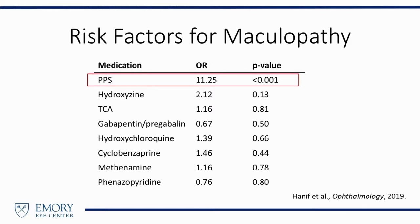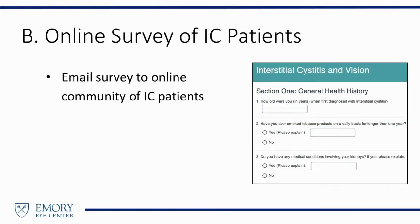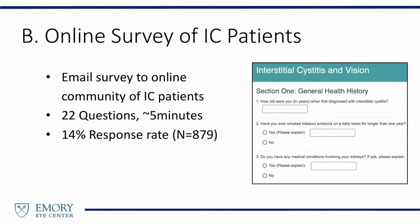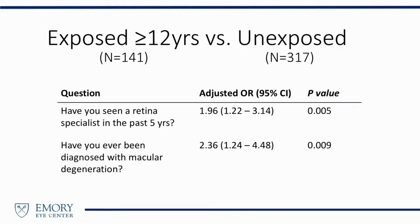But this was just 219 patients seen at an eye center, so we wanted to broaden our search. We did an online survey — we teamed up with an online forum for patients with interstitial cystitis and asked them a basic survey looking at some general health history questions as well as medication exposures. This was about a 5-minute survey of about 22 questions. We had a response rate of about 14%, which is actually pretty good for this type of survey — nearly 900 patients with this condition responded. We decided a priori to look at patients who were exposed over 12 years compared to those who reported no prior exposure to this medication.